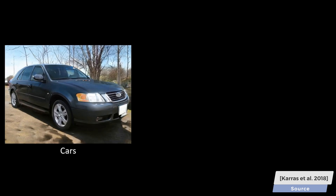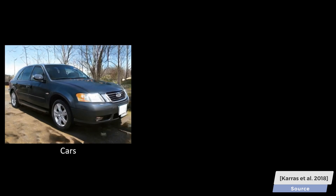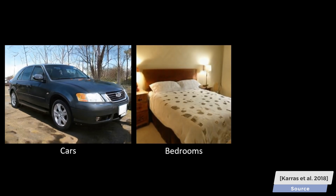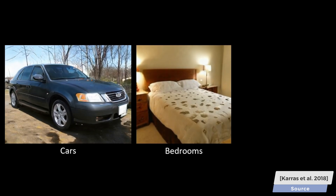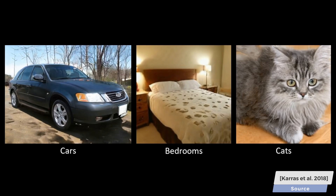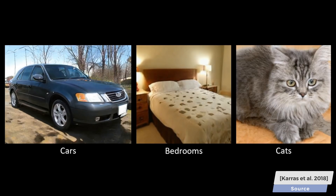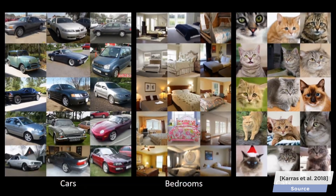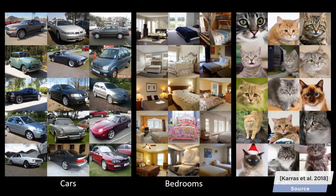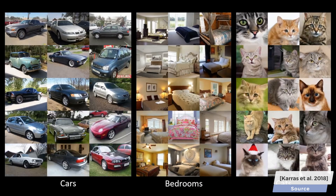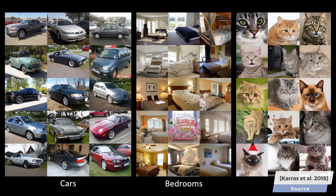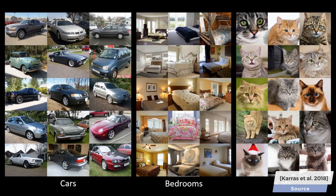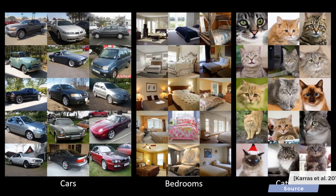It kind of works on other datasets as well — for instance, cars, bedrooms, and of course, you guessed it: cats. Interestingly, it also varies the background behind the characters, which is a hallmark of latent space-based techniques. I wonder if and how this will be solved over time.